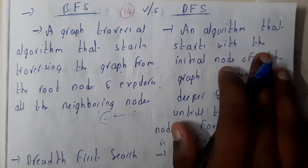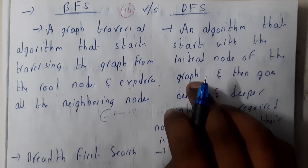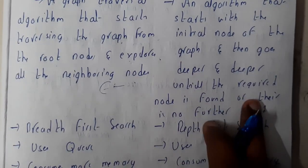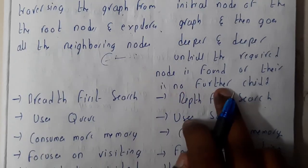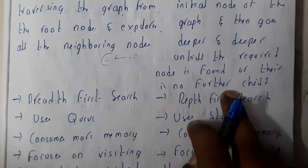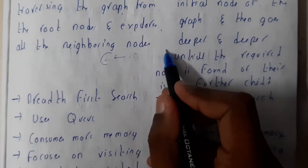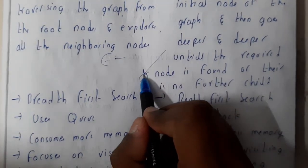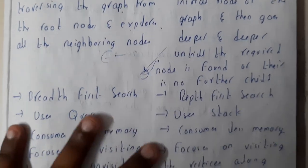Depth first search is an algorithm that starts with the initial node of the graph and then goes deeper and deeper until the required node is found or no further children exist. These are the two situations where it stops. It goes in a particular depth, and if the node is found it concludes there, or if not found it comes back — backtracking is possible.